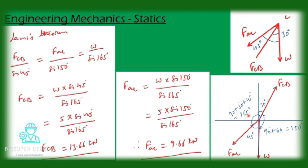Now let us apply Lamy's theorem. Lamy's theorem is FCB by sin 45 equal to FAC by sin 150, that is also equal to W by sin 165. From this we get from the first and last term we get FCB equal to W into sin 45 divided by sin 165.